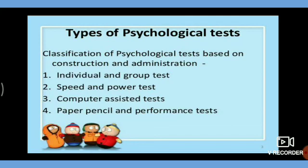Individual and group tests: A psychological test can be administered to one person at a time, called an individual test, or to a group of people at the same time, called a group test. Individual tests are used in clinical diagnosis and vocational guidance. Group tests are used for research purposes or to screen large groups of people.